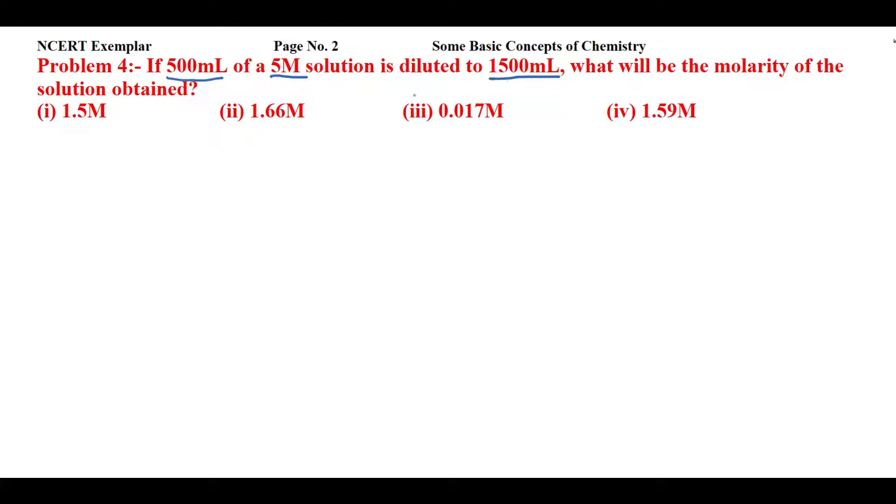For this, there is a very simple formula that is for dilution: M1 (that means molarity 1) times V1 (that means volume 1) equals M2 into V2 (that means product of molarity 2 and volume 2).